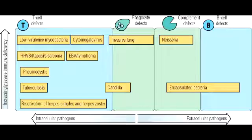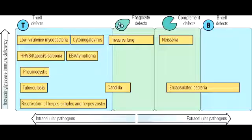Name the common bacterial infections seen with B-cell deficiency. With B-cell deficiency, a patient would be more prone to encapsulated bacterial infections. These include Streptococcus pneumoniae, Haemophilus influenzae type B, Neisseria meningitidis, Salmonella, Klebsiella pneumoniae, and group B strep.